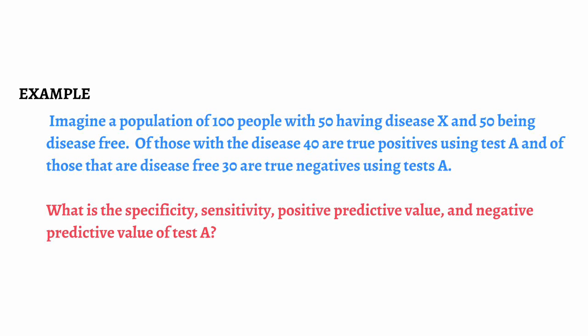Now that we understand and know how to calculate these terms, we can attempt some basic problem solving. Imagine a population of 100 people with 50 people having disease X and 50 people being disease free. Of those with the disease, 40 are true positives using test A. And of those that are disease free, 30 are true negatives using test A. What is the specificity, sensitivity, positive predictive value, and negative predictive value of test A? Pause here and take some time to think this through.